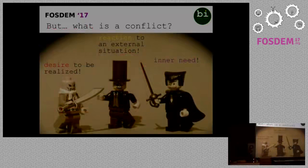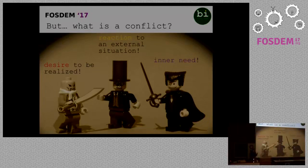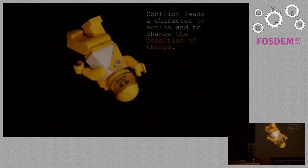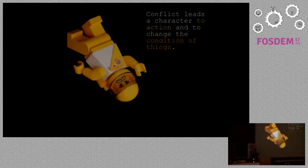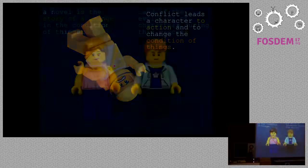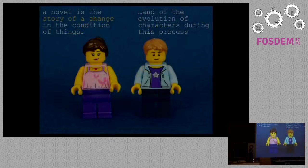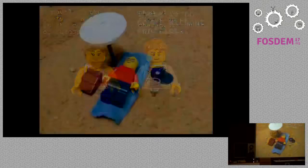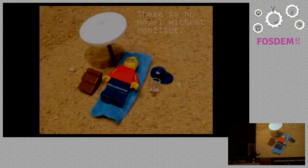But what is exactly a conflict? A conflict is a desire to be realized, a reaction to an external situation. It is an inner need. Conflict leads a character to action and to change the condition of things. A novel is the story of a change in the condition of things and of the evolution of characters during this process. There is no novel without conflict. That's it.